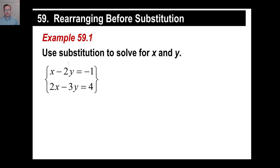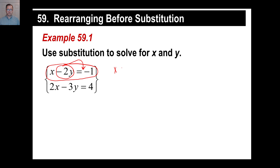Go ahead and pause to copy it down. Use substitution to solve for x and y. This top equation has a nice x in it. The bottom equation is 2x minus 3y and all that — you'll have to do some things. What you want to do is look at the circled equation and make it look like x equals 2y plus 3, or whatever it is. So you want x by itself in the top equation. Move the other part over, and you have x equals 2y minus 1.